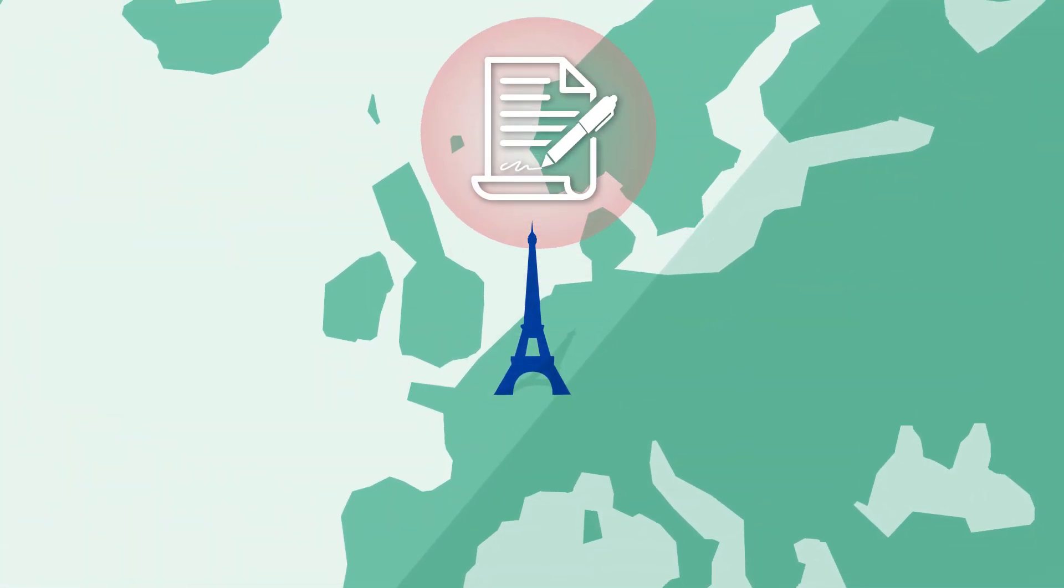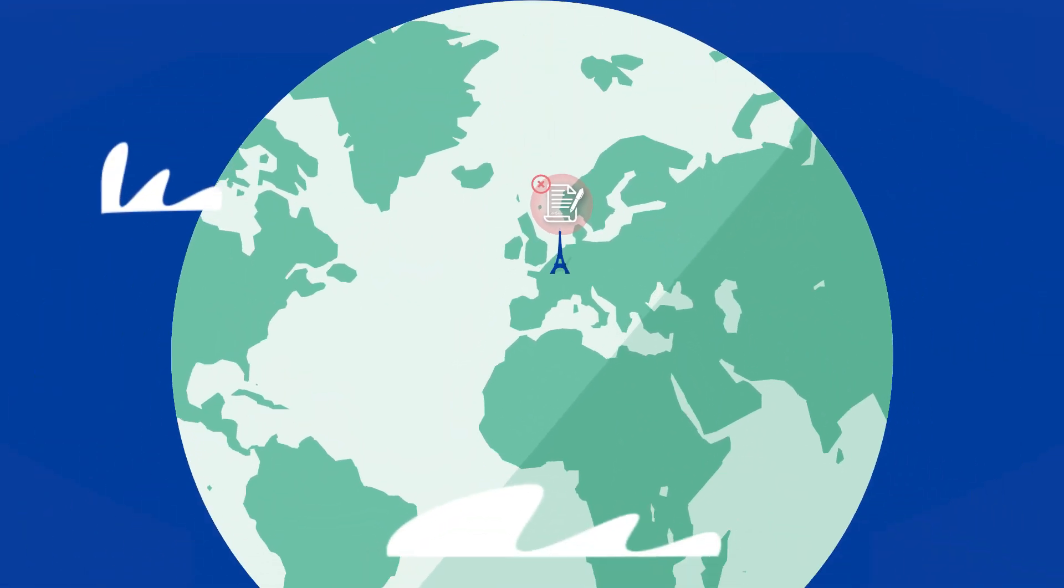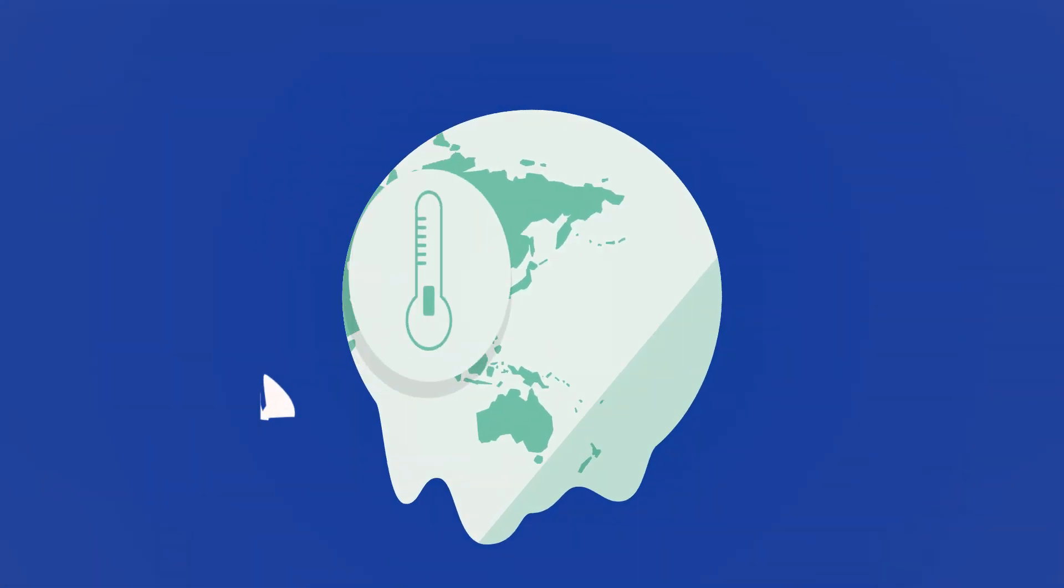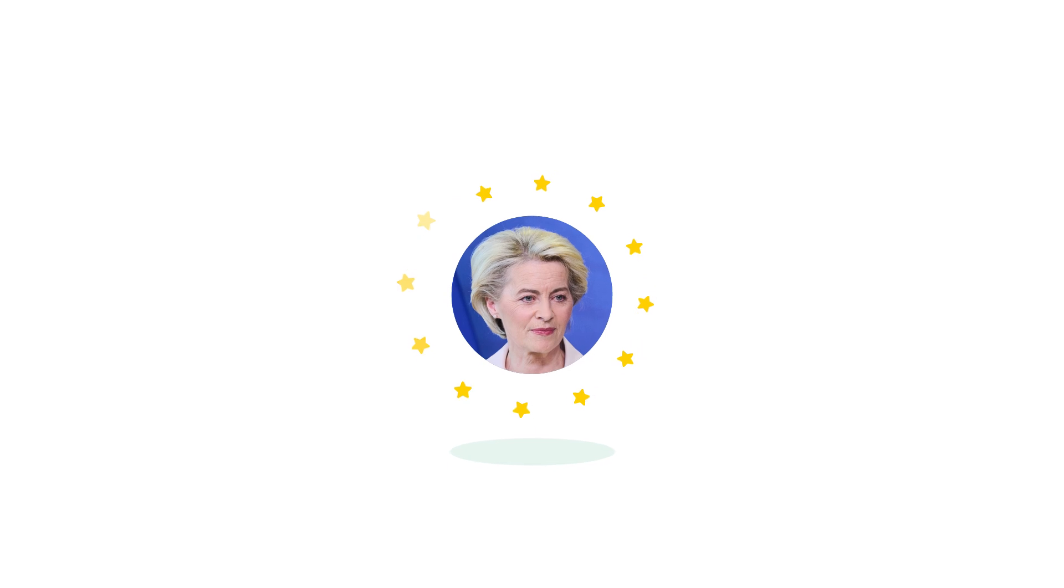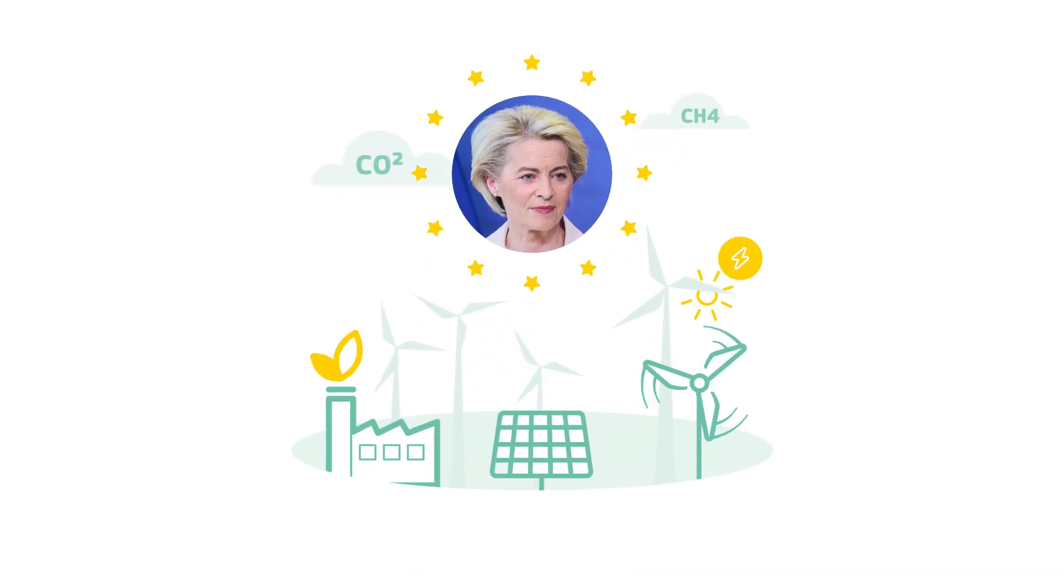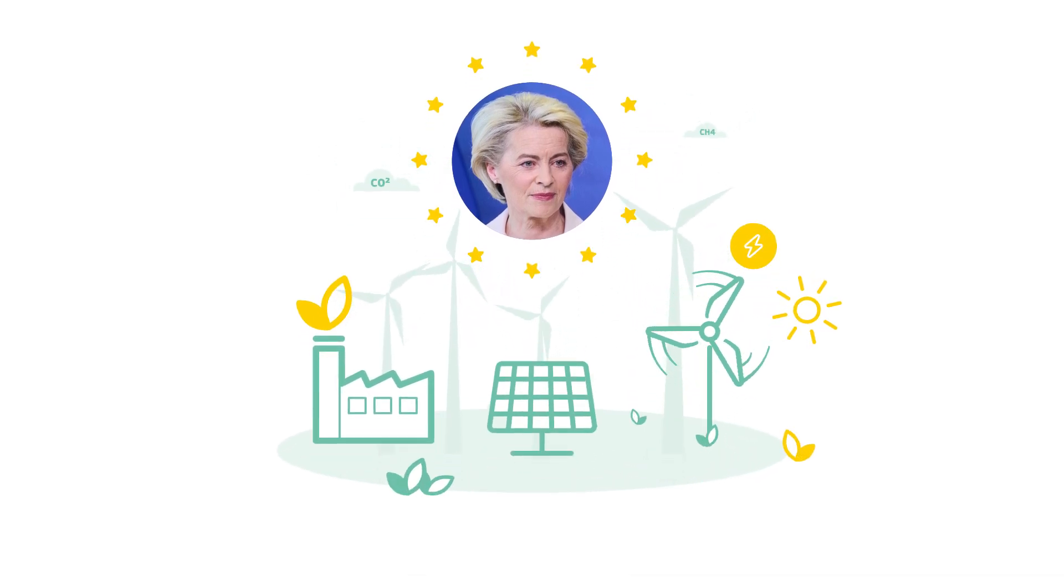The world is not on track to meet the Paris Agreement goal and to limit global warming to 1.5 degrees Celsius. That's why President von der Leyen has suggested a global pledge on renewables and energy efficiency.